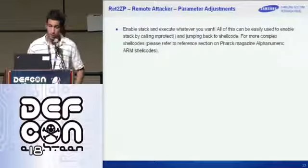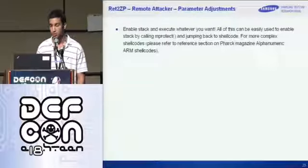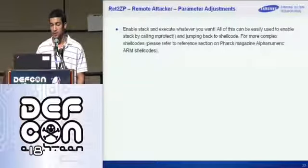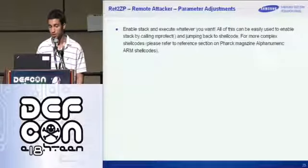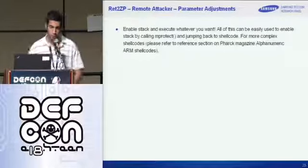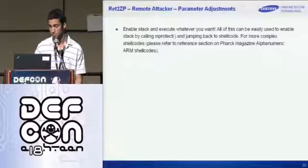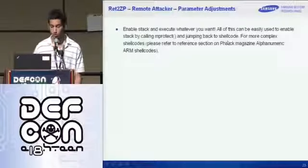As a remote attacker, what we want to do is enable the stack and execute whatever we want. That can be easily done by calling mProtect and changing our place in memory to be executable, then jumping to it. There's a good section on this in Phreak Magazine on alphanumeric ARM shellcodes.